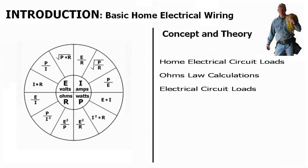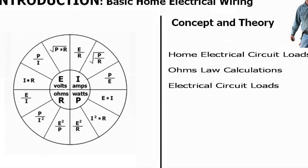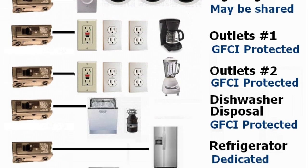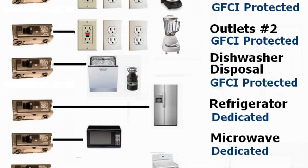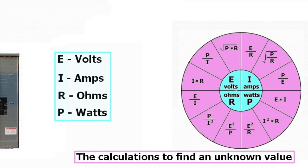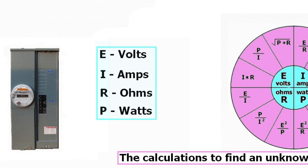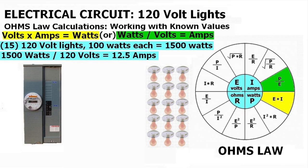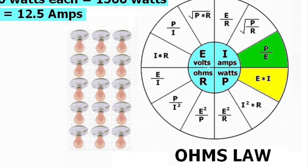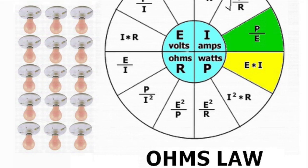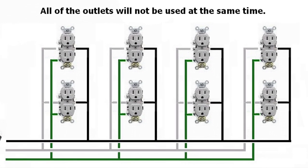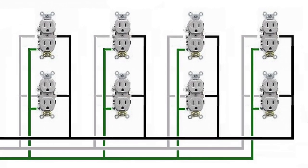We also cover Ohm's law and the concept and theory behind it. We give you Ohm's law calculations and show you the most commonly used calculations and how they apply at the home for configuring electrical circuits. We show a lot of the basic circuits installed in the home — most are required by the National Electrical Code — and we show wiring diagrams of switches and outlets calculated according to Ohm's law.